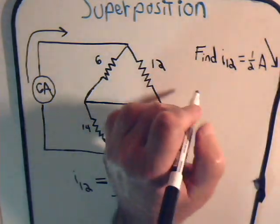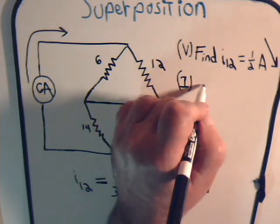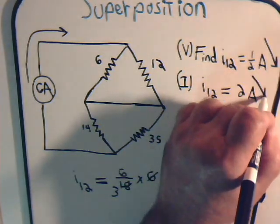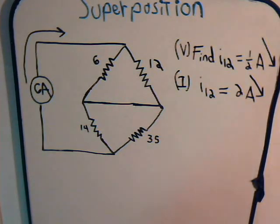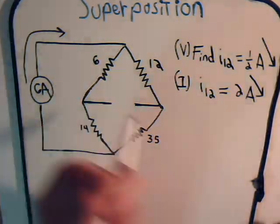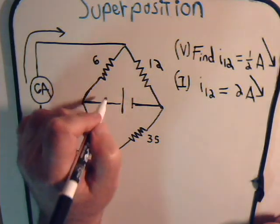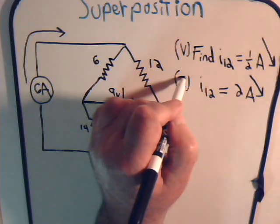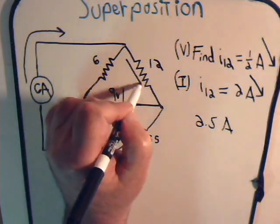So this is from the voltage source, and now from the current source, going in the same direction. So now, when we put the two together, put our voltage source back in, 9 volts. Now the current that goes through the resistor from the voltage source and the current source is 2.5 amps in that direction.